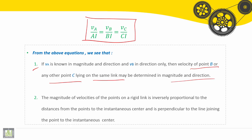Second: the magnitude of velocities of the points on a rigid link is inversely proportional to the distances from the points to the instantaneous center, and is perpendicular to the line joining the point to the instantaneous center.